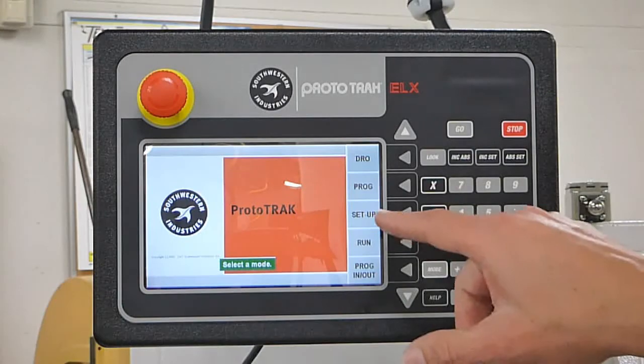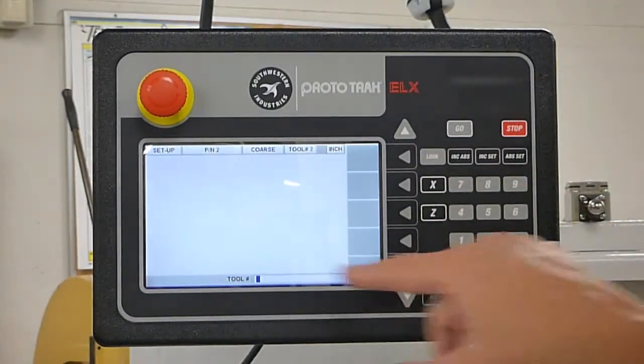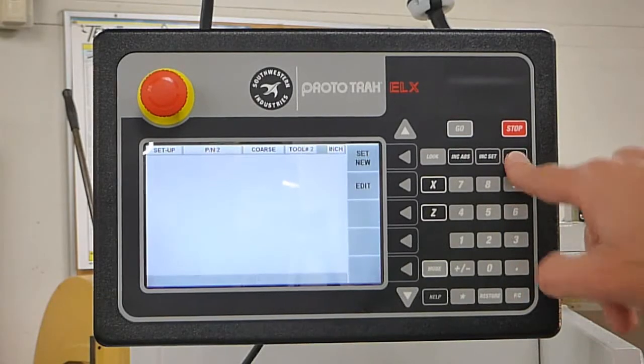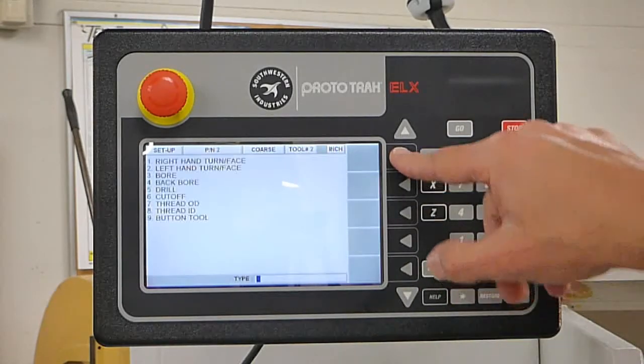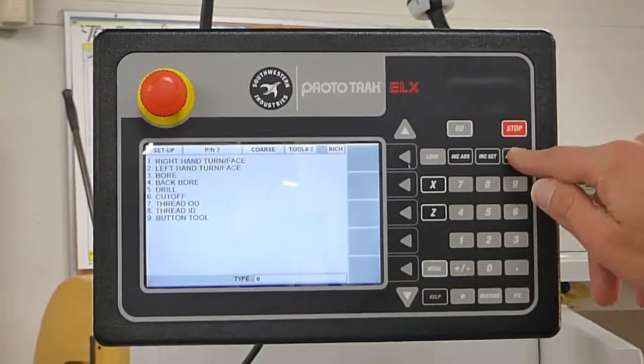So we're going to start by going into setup, tool setup, and then tool number two, absolute set, and then set new. We're doing a cutoff tool, so number six, absolute set.